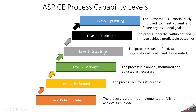Level 3 is named as established, meaning we have a defined process. The process is well defined, documented, and understood by the organization. It is integrated into the organization's overall management process.